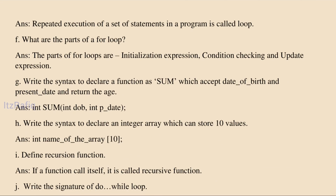What is a loop? The definition is shown on screen. What are the parts of a for loop? The parts are initialization expression, condition checking, and update expression. These are the main parts of a for loop.